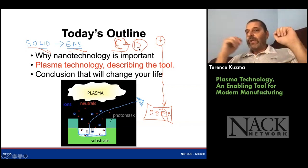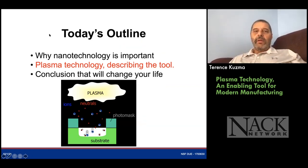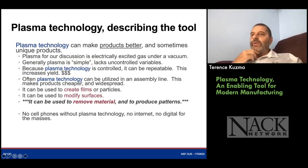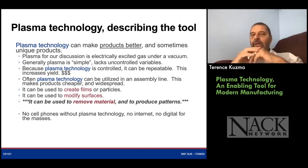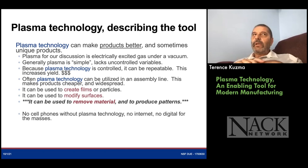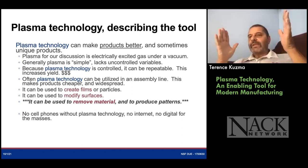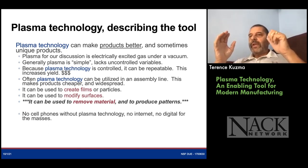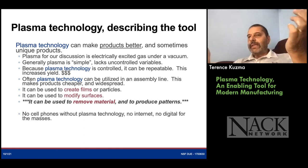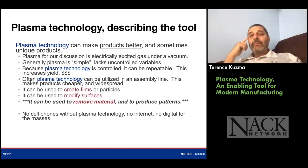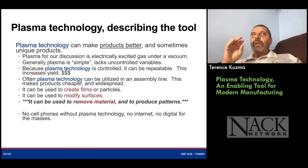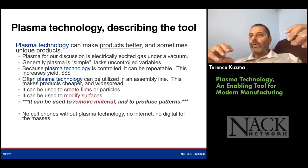In fact, when you make a plasma like a fluorescent light bulb, you make ions and when they relax — the electron comes back into the outer orbital — it releases a photon, so it's like a light machine. Plasma technologies can make products better and sometimes unique products. Plasma for our discussion is an electrically excited gas in a vacuum chamber. It's complex but well-controlled, and because it's in a well-defined boundary, you can manipulate it.